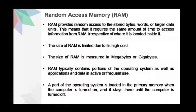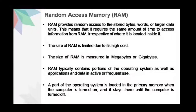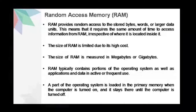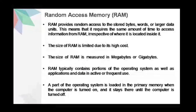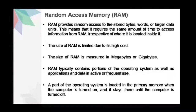RAM typically contains portions of the operating system as well as the applications and data in active or frequent use. A part of the operating system is loaded in the primary memory when the computer is turned on and it stays there until the computer is turned off. RAM is also used for the temporary storage of input data, output data, and intermediate results. The input data entered into the computer using the input device is stored in RAM for processing. Once the processing is done, the output data is stored in RAM before being sent to the output device. Any intermediate results generated during the processing of a program are also stored in RAM.